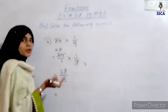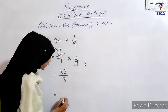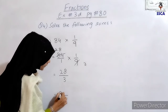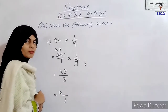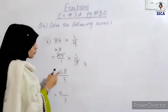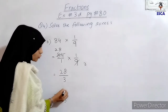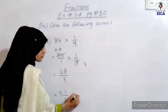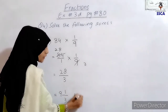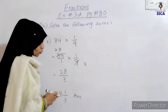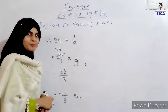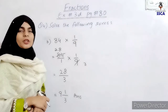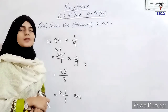After cancellation, we multiply. 9 divided by 3 gives 3, and 84 divided by 3 gives 28. Multiplying gives 28 over 3. Converting to a mixed number, the answer is 9 whole 1 over 3. I hope that was easy to understand.